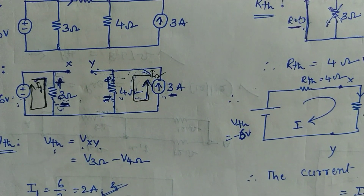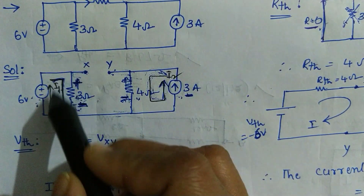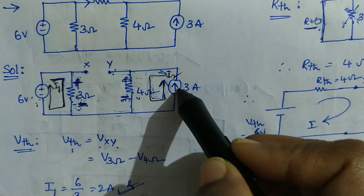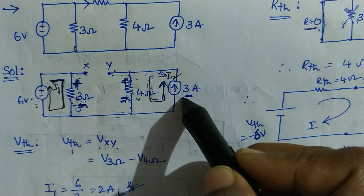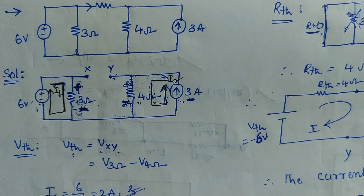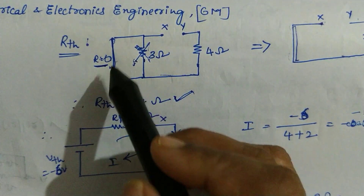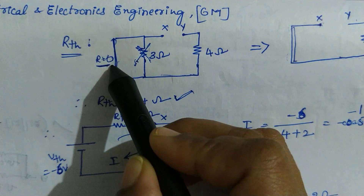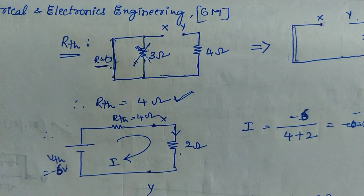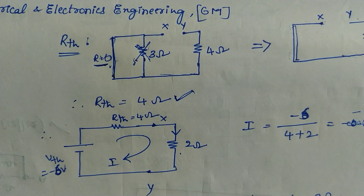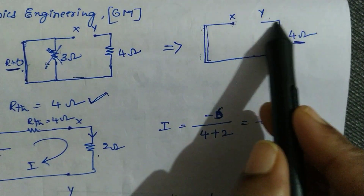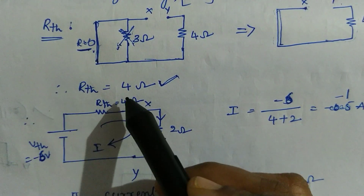Now let us calculate R Thevenin. In this network we should not consider any sources. The voltage source is replaced by a short circuit and the current source is replaced by an open circuit, making all sources zero. The circuit shows a short circuit with R equal to 0, so we can actually omit the 3 ohm resistor — parallel combination of 0 and 3 gives 0. Neglecting it, the resistance between X and Y is simply 4 ohms. So R Thevenin is 4 ohms.